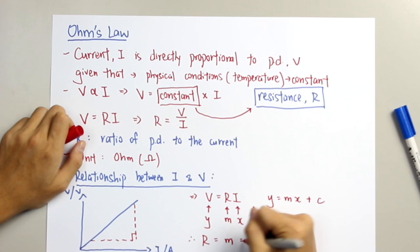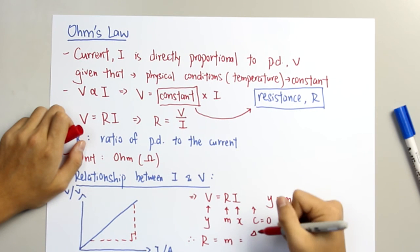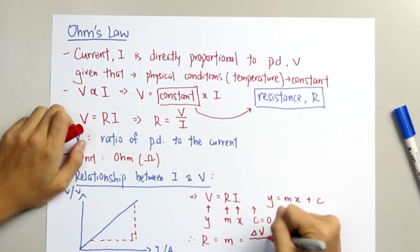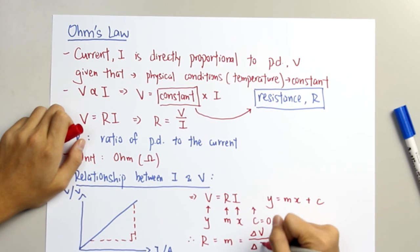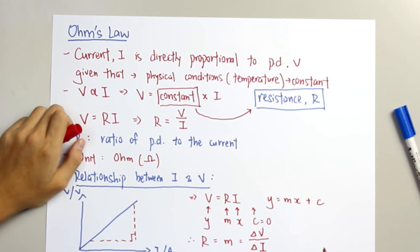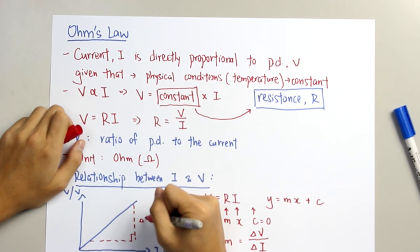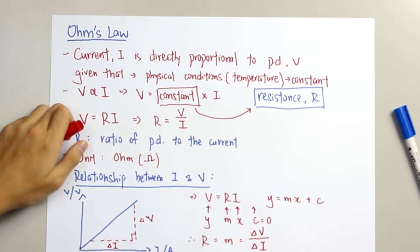We can also see that resistance equals the change in potential difference over the change in current. This is how you calculate it, and this is the change in current.